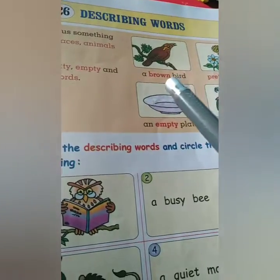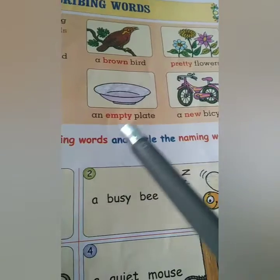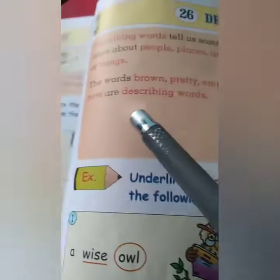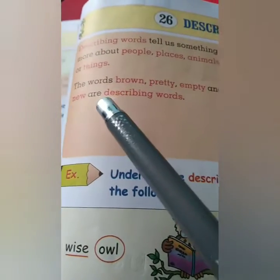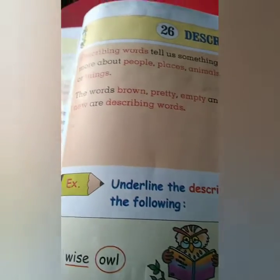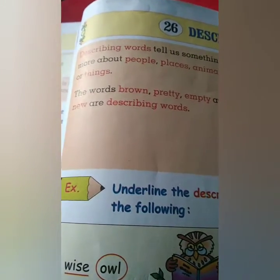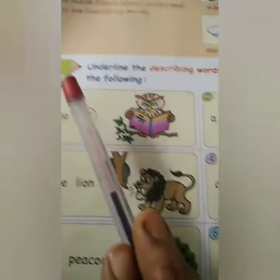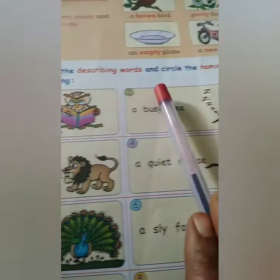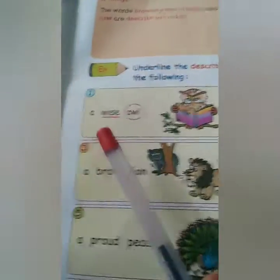For example: a brown bird, a pretty flask, an empty plate, a new bicycle. The words brown, pretty, empty, and new are describing words.